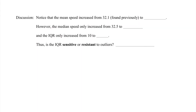Moving to the discussion of how the 15th car impacted the mean, median, and IQR: the mean speed increased from 32.1 to 36.7 when we added the new data. However, the median speed only increased from 32.5 to 33 — an increase of half a mile an hour — and the IQR only increased from 10 to 11 miles an hour. Based on our results, the IQR is resistant to outliers, since it did not change significantly from the 100 mph addition.